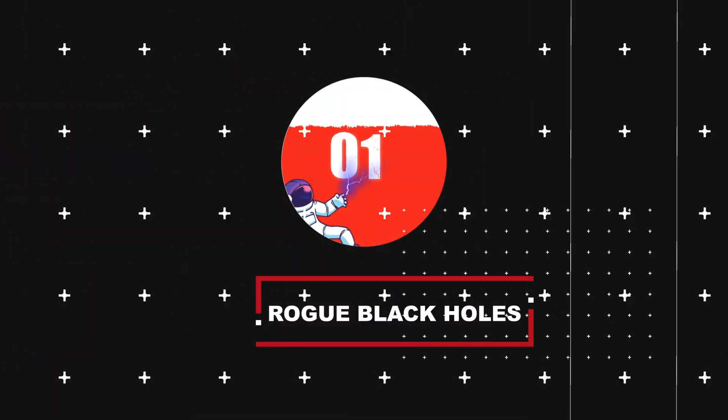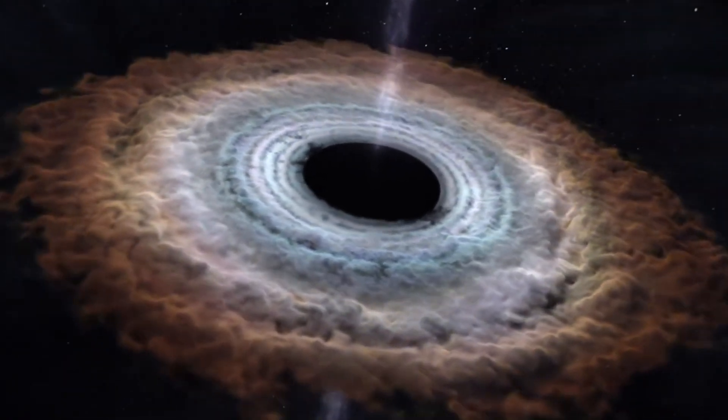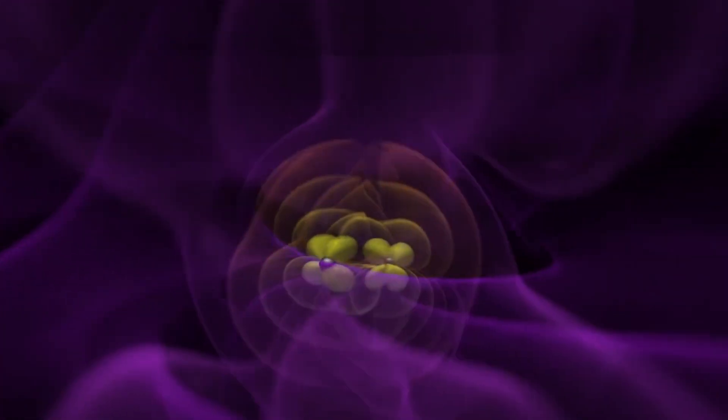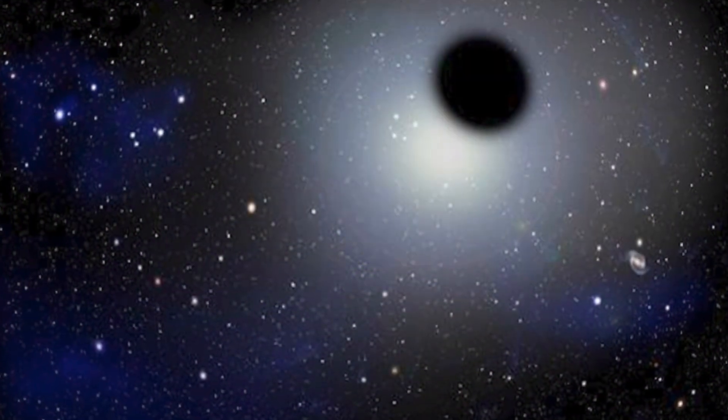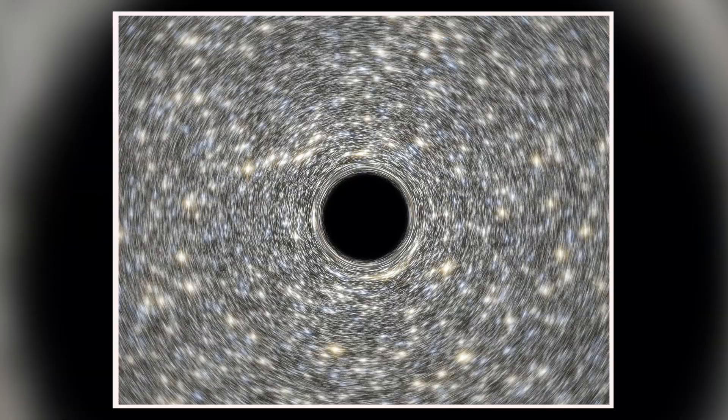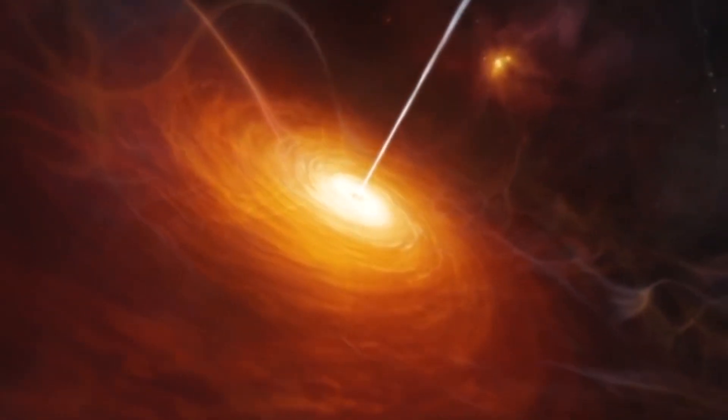Number 1, rogue black holes. Black holes are already terrifying enough as they are, but what if we told you that some of them have the possibility of going rogue? Black holes are normally located right at the center of a galaxy. The one located in Milky Way's core is actually a supermassive black hole, which is even bigger than normal black holes. But that's not even the scariest part.